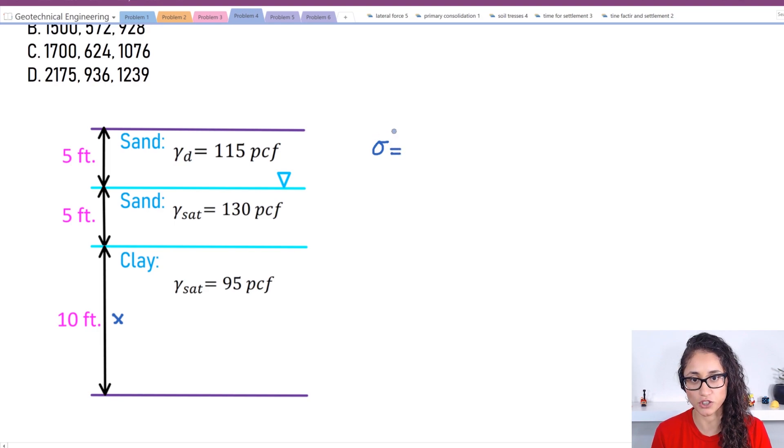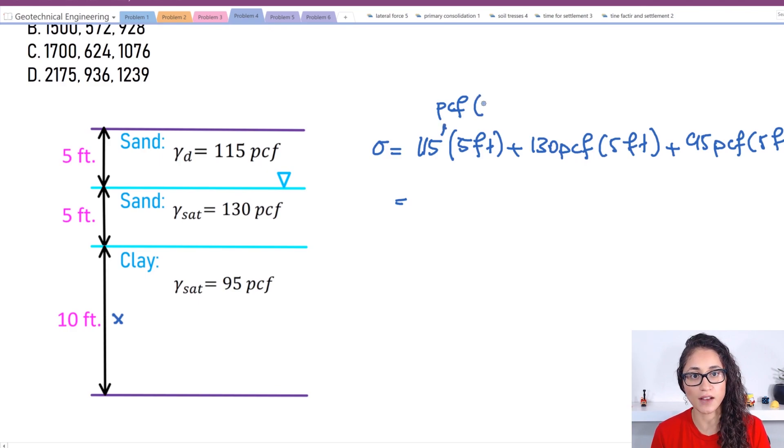So let's start with the total pressure. I have sigma equals 115 times my height, which is five feet plus 130 PCF times five feet plus 95 PCF times five feet. Also note guys that this is in PCF and then I have times feet. PCF is usually pounds per cubic feet, right? If you multiply this by feet, this cancels. Now you have pounds foot squared, which is PSF, which is the units for pressure. If you plug in this, you will get 1700 PSF. So this is our total pressure.